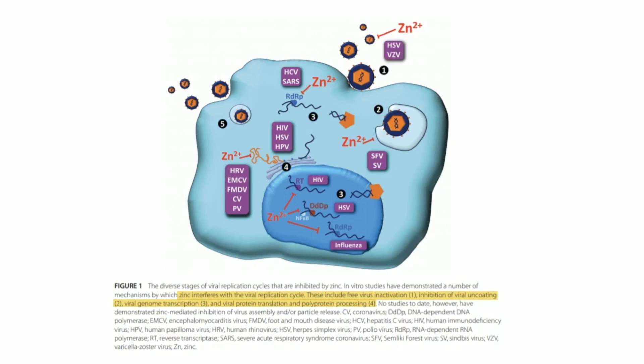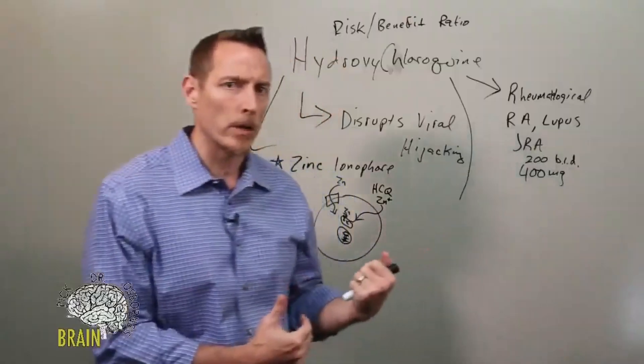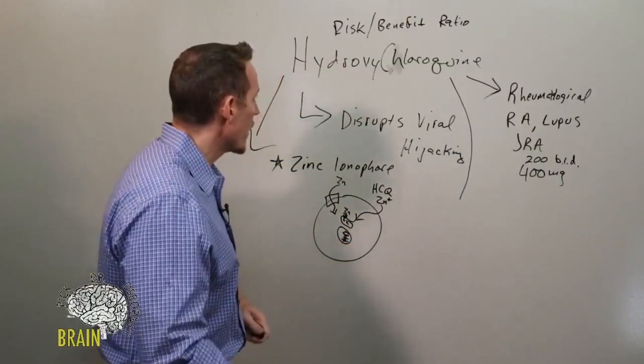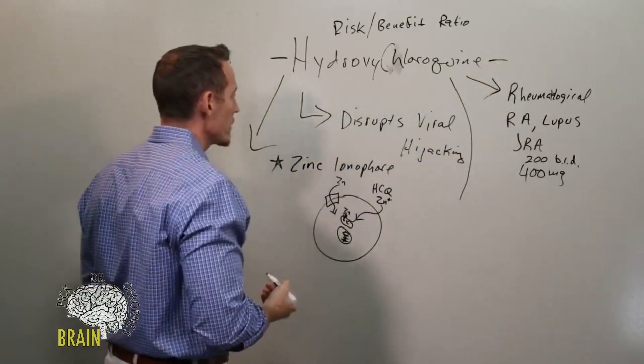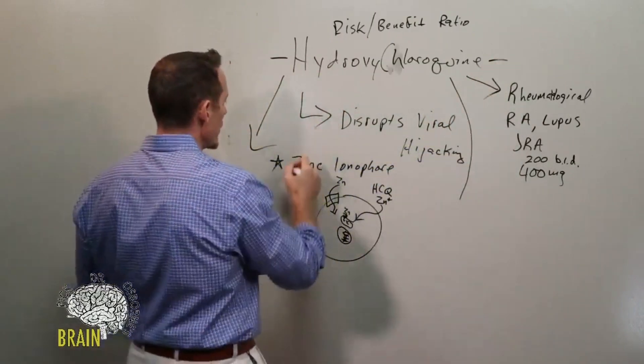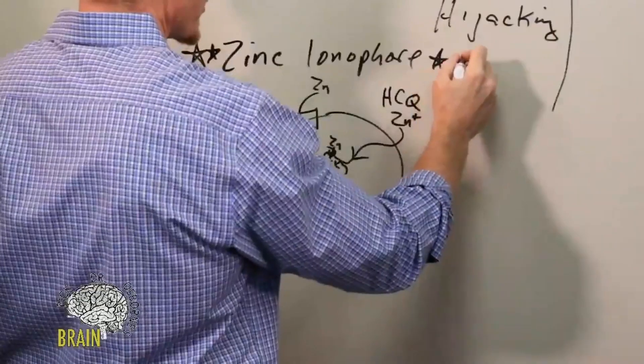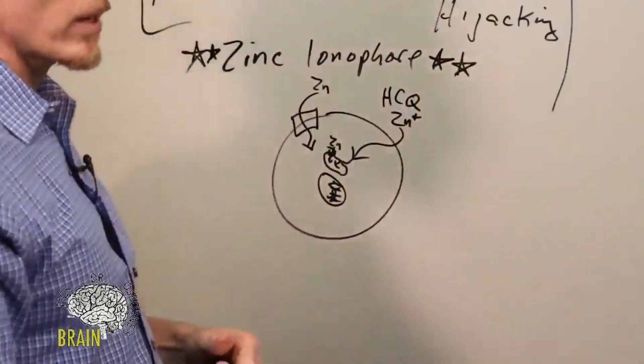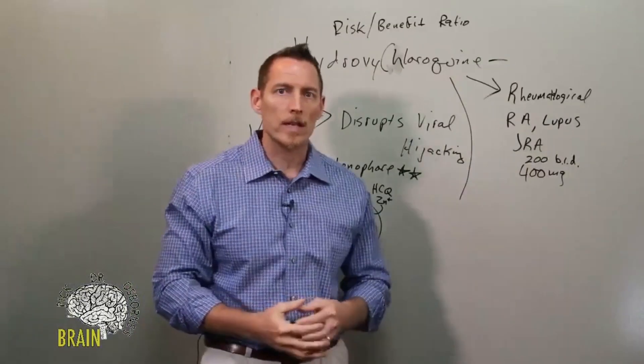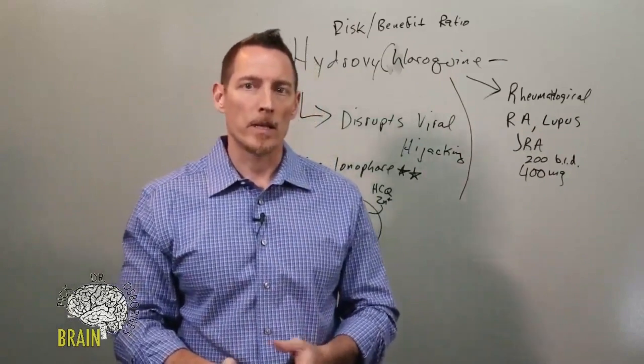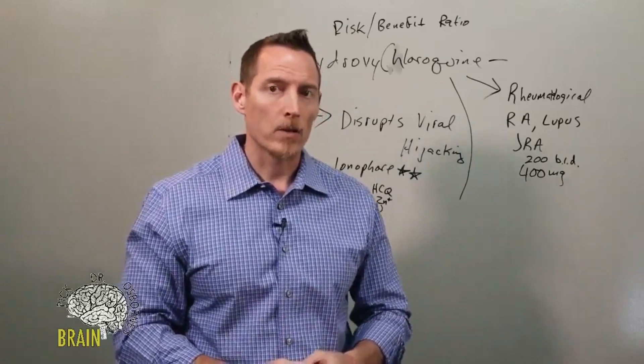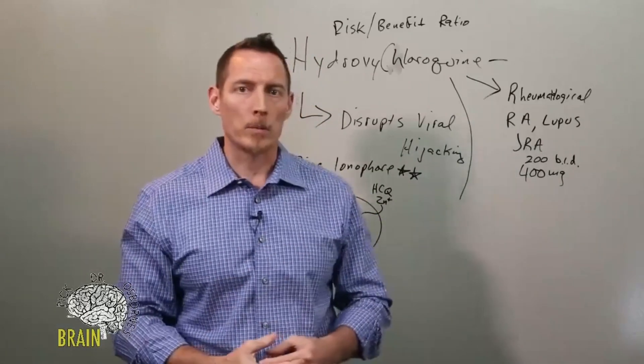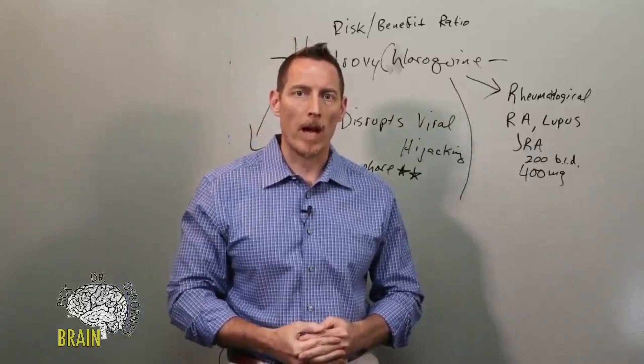Now knowing all of that about zinc, let's back up to the board here and go back to what we know about hydroxychloroquine. Hydroxychloroquine and chloroquine as medications are known zinc ionophores, meaning they concentrate zinc in areas of the cell where zinc can then be effective at inhibiting viral replication through multiple different mechanisms of action.